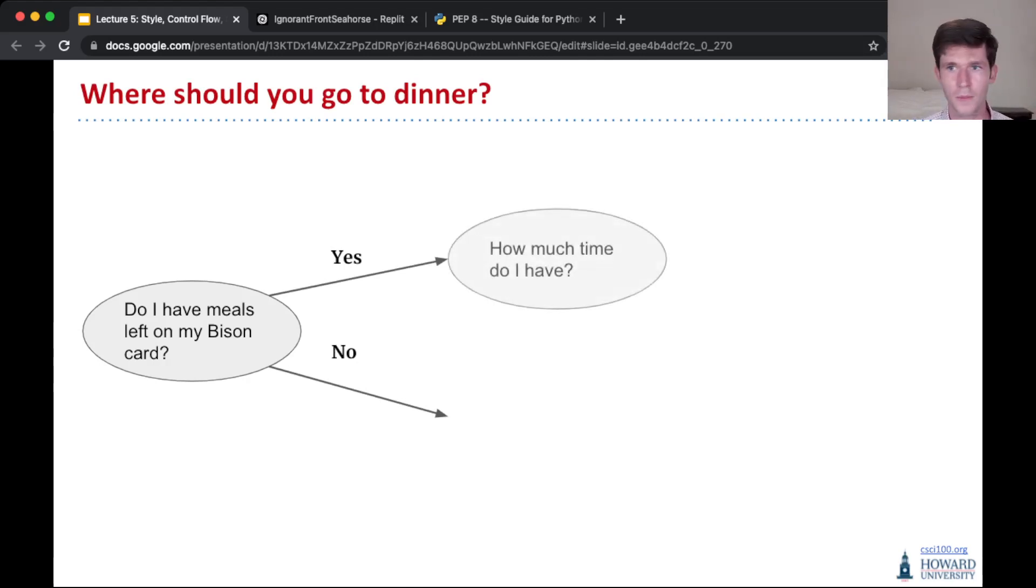But then, let's say you do, maybe you have a question of how much time do I actually have to get a meal? And if you have a bunch of time, like more than 30 minutes, you'll go to Punch Out. If you have less than 30 minutes, though, you want something quick, maybe you'll go to Blackburn.